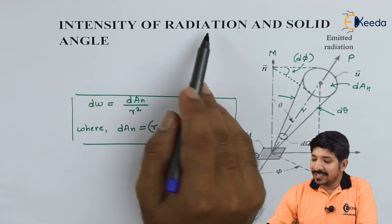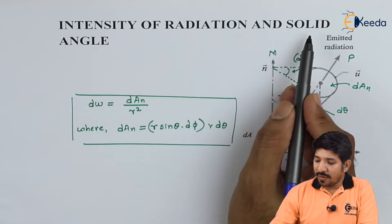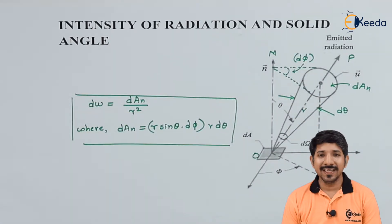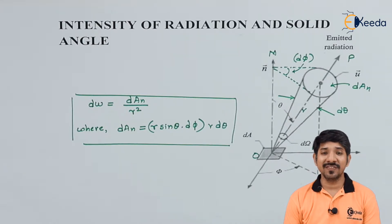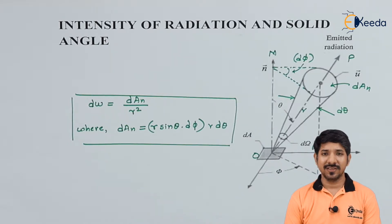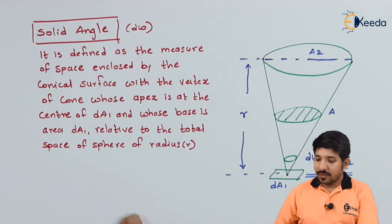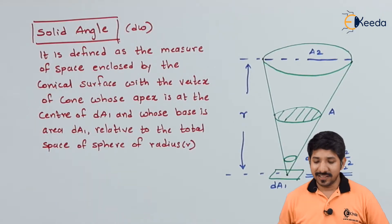The intensity of radiation and solid angle — out of these, let us talk about the solid angle first. We are talking about the analysis of radiation, and radiation itself is quite complicated to understand because of the uncertainty in its direction and wavelength. So for simplicity, these two terms are coined: the solid angle and the intensity of radiation.